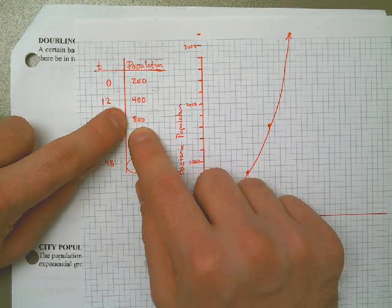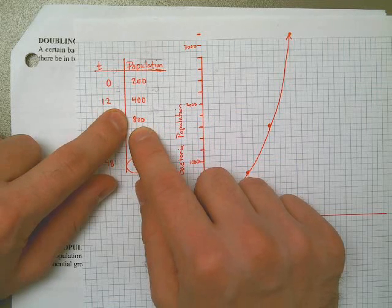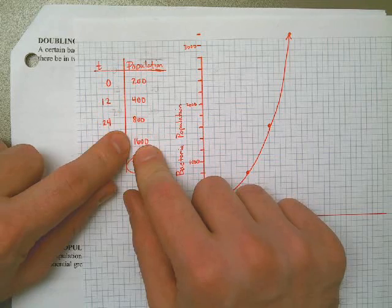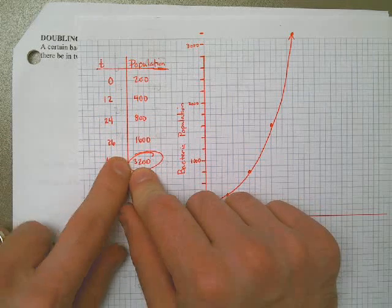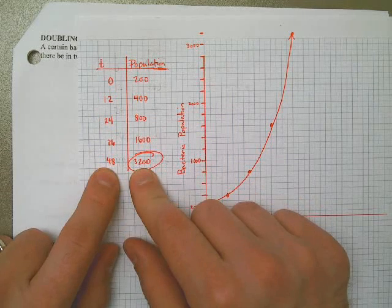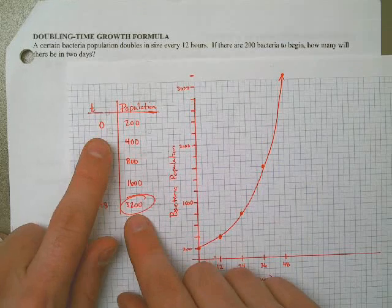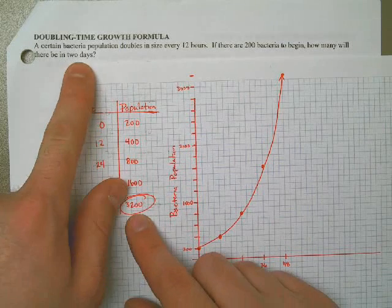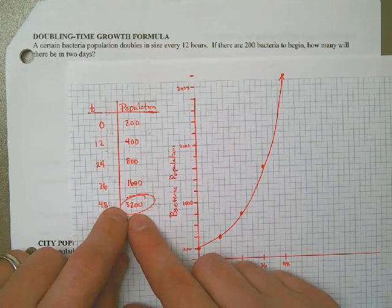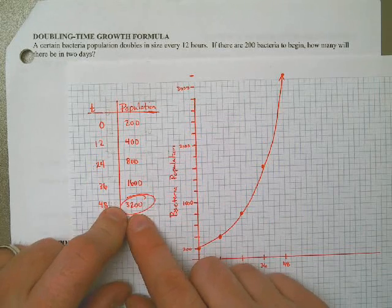400 to 800, so not increasing by 200, but actually multiplying times 2, 800 to 1600, 1600 to 3200. Now why did I stop at 48 hours? Because 48 hours is the same thing as 2 days. So in this problem, I already know the answer is going to be 3,200.